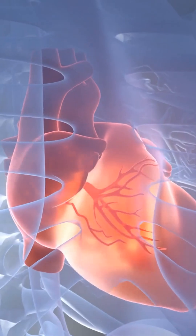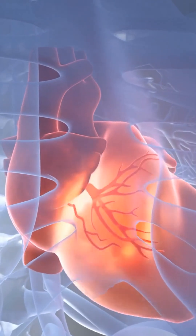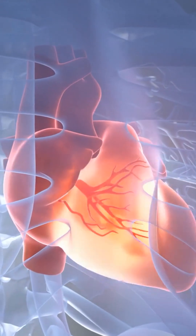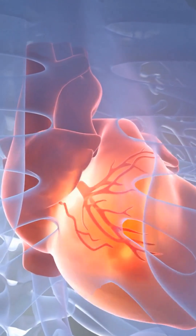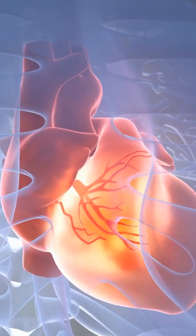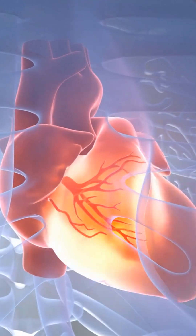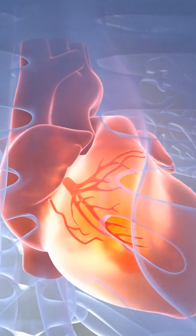The second type of neuropathy is called autonomic neuropathy. This type affects the autonomic nervous system that controls the involuntary body functions, like the heart rate, blood pressure, digestion, and bladder function.